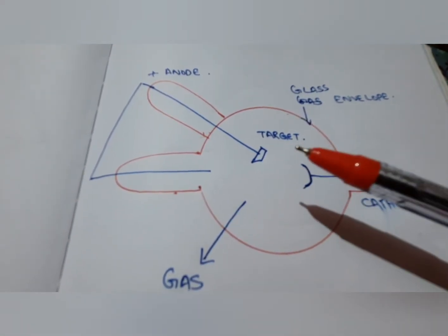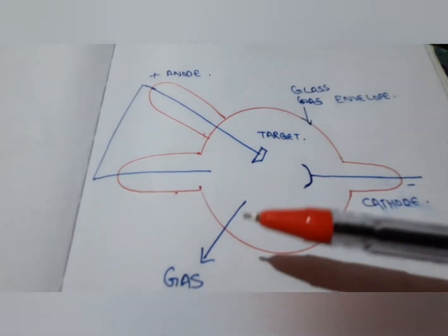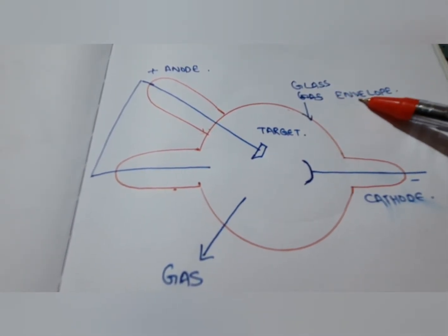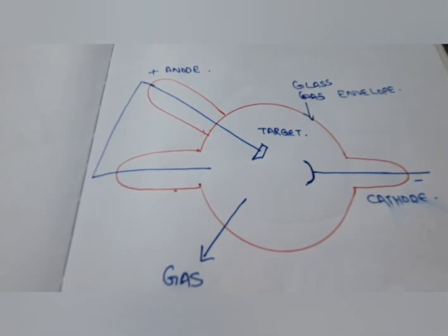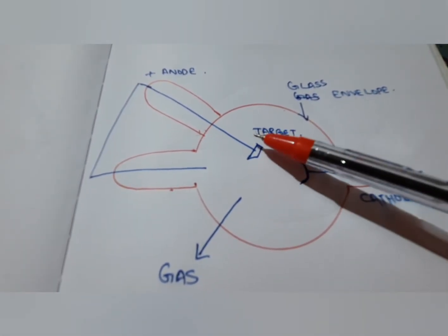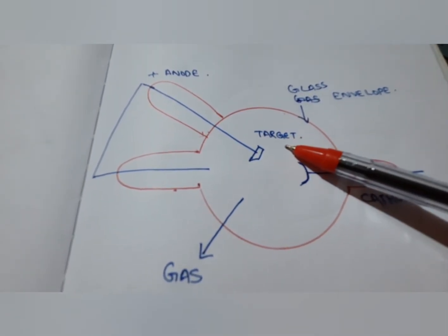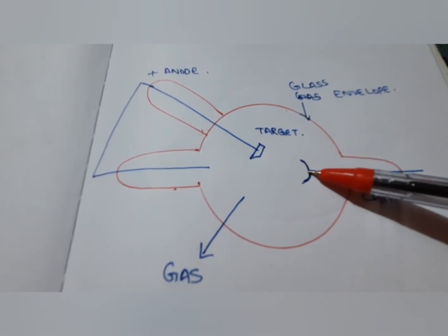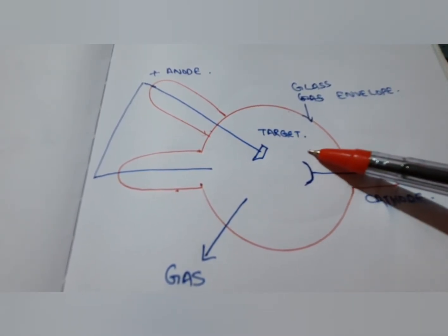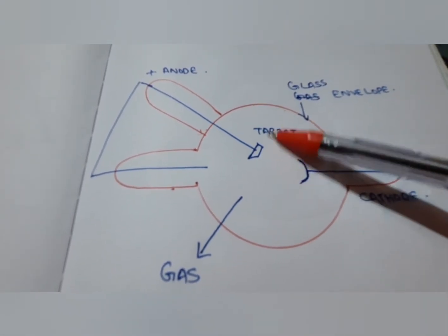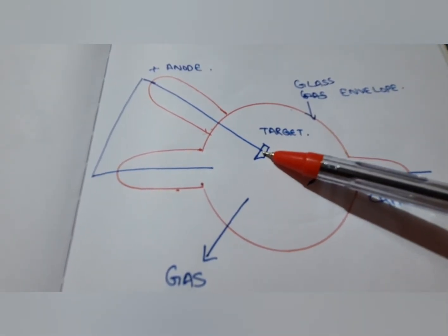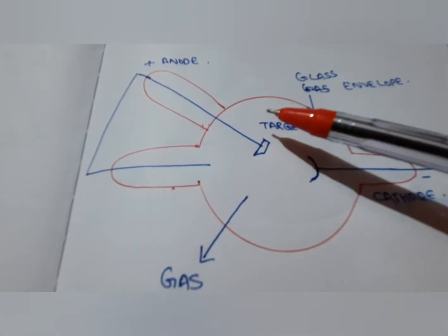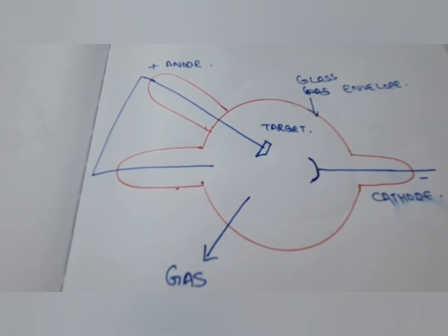This is the gas tube. The entire arrangement inside is placed within a glass envelope filled with gas. It has a positive anode known as the target and a negative cathode. The cathode consists of an aluminium stem and aluminium disc. The target is made up of either tungsten or platinum backed with copper. This is how a gas tube looks.